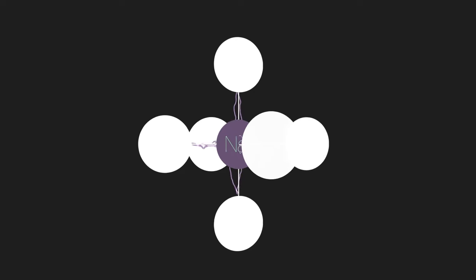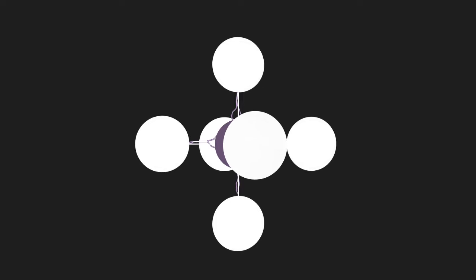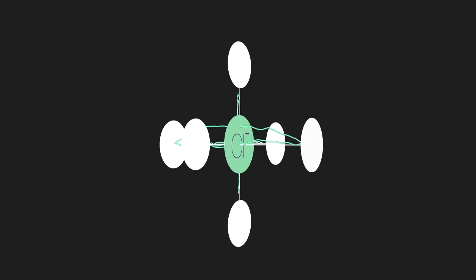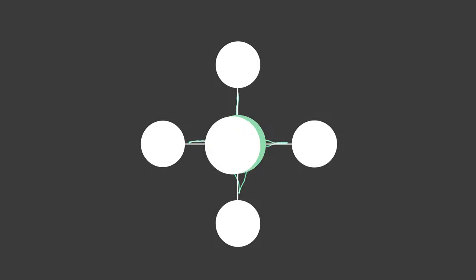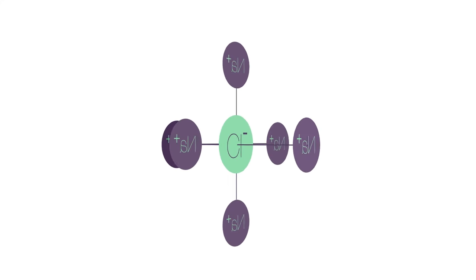The electrostatic attractions in a lattice structure are very strong. Let's think about it. Each sodium ion is held in place by the electrostatic attraction of six neighboring chloride ions in all possible 3D directions. Similarly, each chloride ion is held in place by the electrostatic attraction of six sodium ions, also in all possible 3D directions.